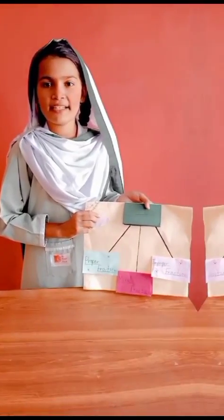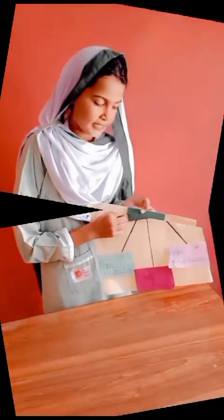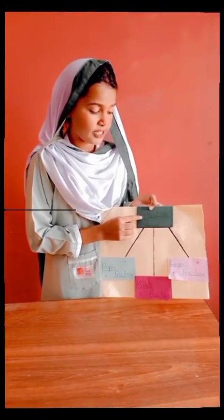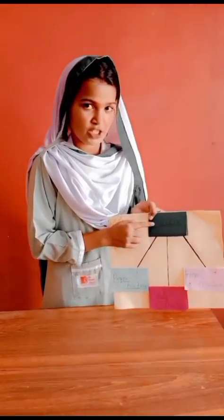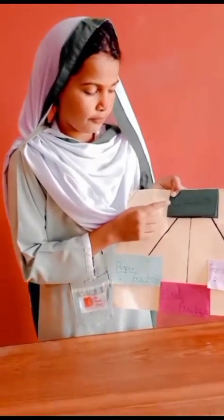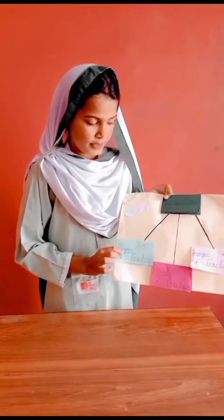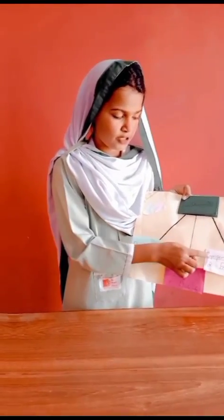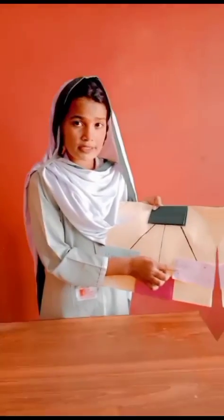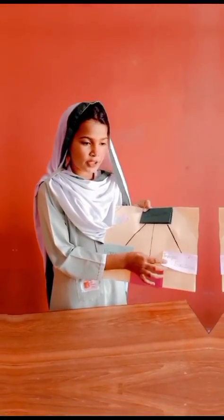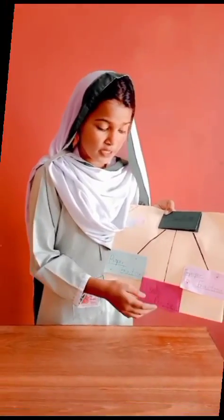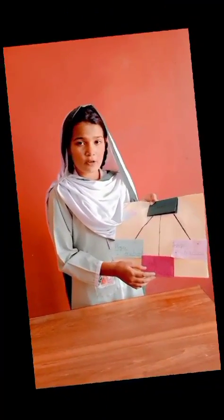Assalamu alaikum, my name is Nanda. A fraction represents equal parts of a whole or a collection. Types of fractions include proper fractions, improper fractions. The fraction in which the numerator is less than the denominator is a proper fraction. The fraction in which the numerator is greater than the denominator is an improper fraction.